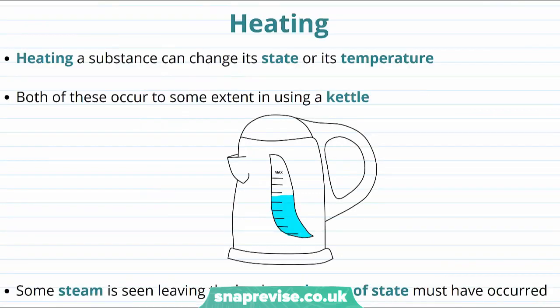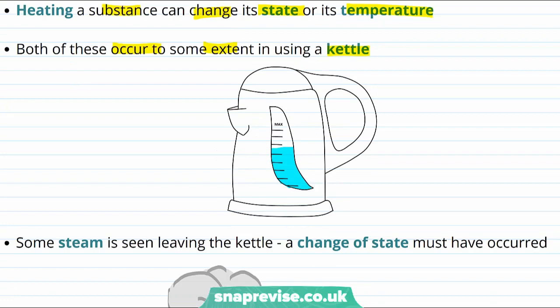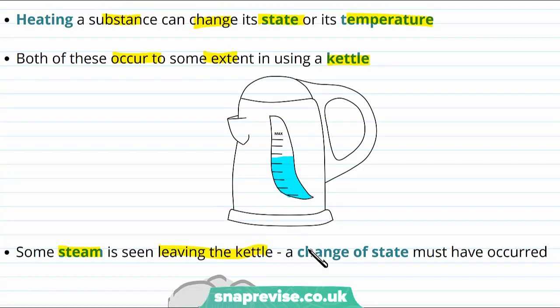So it turns out that heating a substance can lead to a change in its state or its temperature. And we can see a good example of this, because both of these occur to some extent when we use a kettle. Now we know that we use a kettle to get hot water for maybe tea or coffee, but we also know that steam can be seen leaving the kettle once the water has started boiling. So here a change of state must have occurred to turn the water from liquid water to gas water.